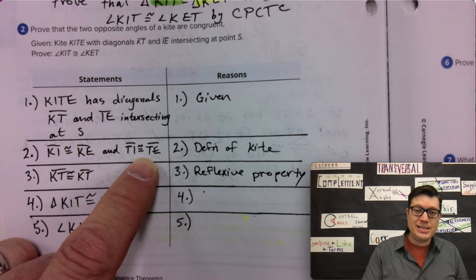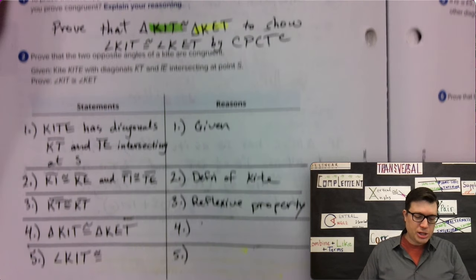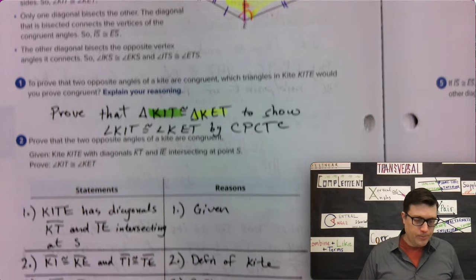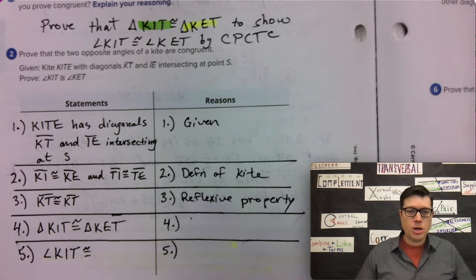Side KI and side KE are congruent because they're part of the sides of a kite. Side TI and side TE are congruent. That's actually where I have the one spike, two spikes. Statement two, definition of a kite. All right, we'll leave right there for a minute.